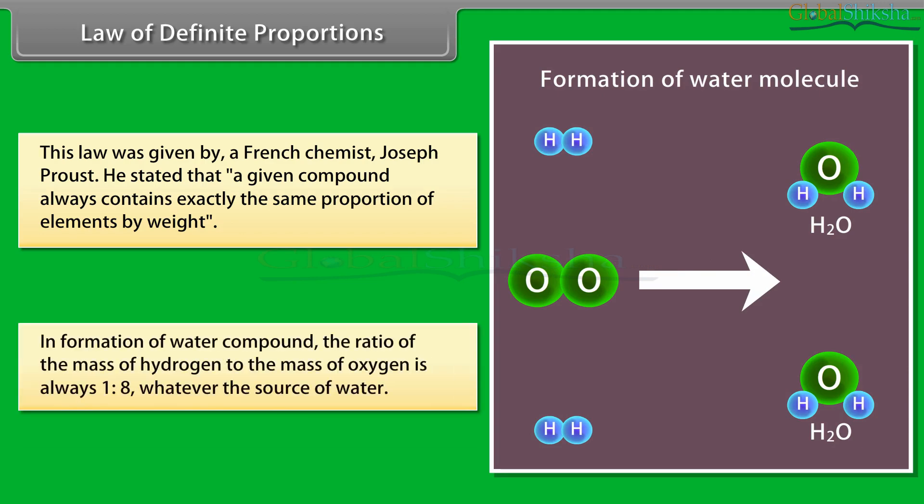In the formation of a water compound, the ratio of the mass of hydrogen to the mass of oxygen is always 1:8, whatever the source of water.